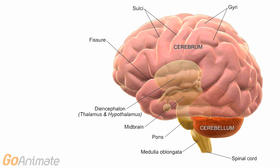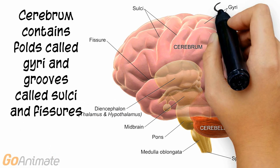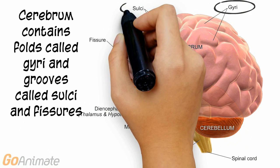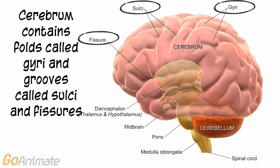The outer portion of the brain is called the cerebrum. The cerebrum contains a number of structures. The folds on the surface of the cerebrum are called gyri. The grooves are called sulci, and the deep grooves are called fissures.